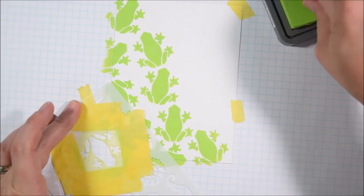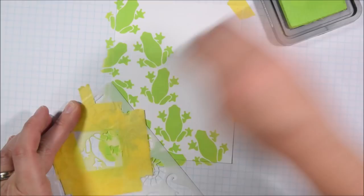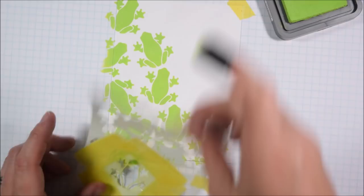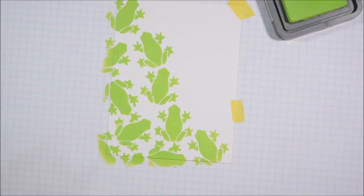I am moving around the tape that holds it down as I go just because I don't want the tape to be laid over any of the frogs because they might not be dry yet. Distress Oxide ink does have a bit of a pigment to it and so it can take a tiny bit longer to dry than some other inks.